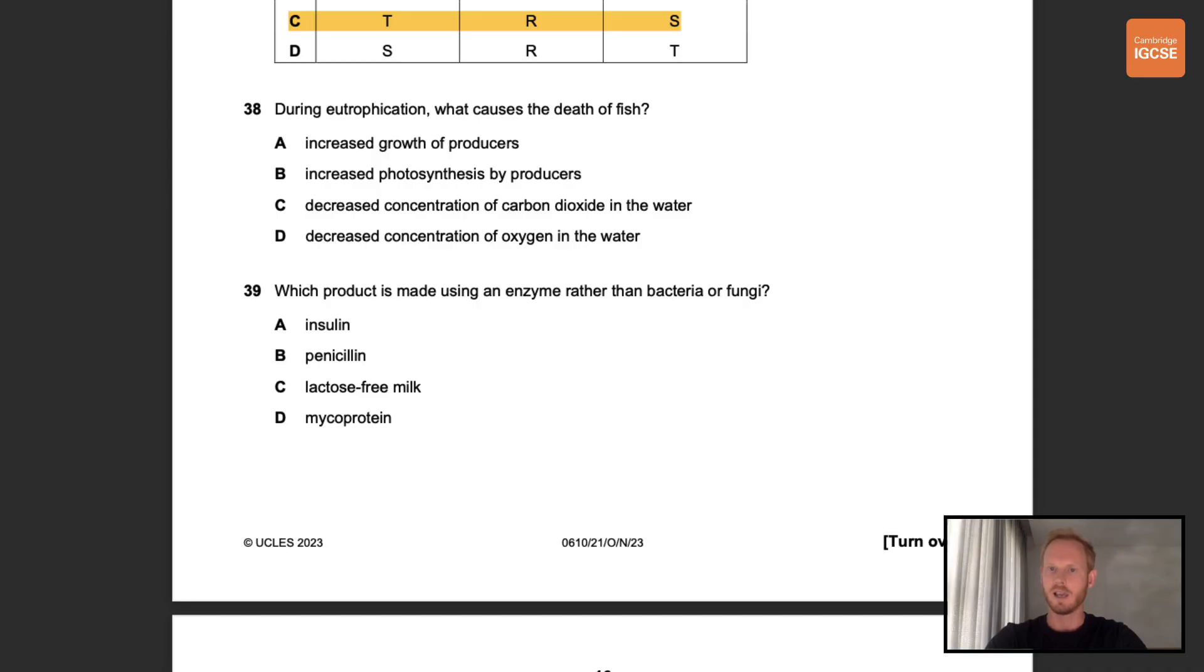Number 38. During eutrophication what causes the death of fish? The correct answer here is D, decreased concentration of oxygen in the water. Go and watch my video on topic 20.3 if you're unsure why.